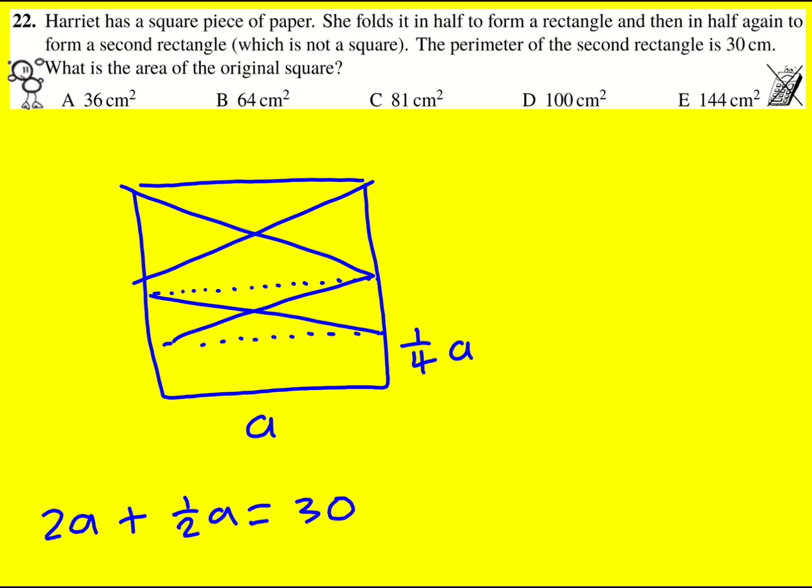So that's going to be 5 over 2 A, and therefore 5A is going to equal 60, A is going to equal 12, and the original square will therefore have area 12 times 12, it's going to be 144.